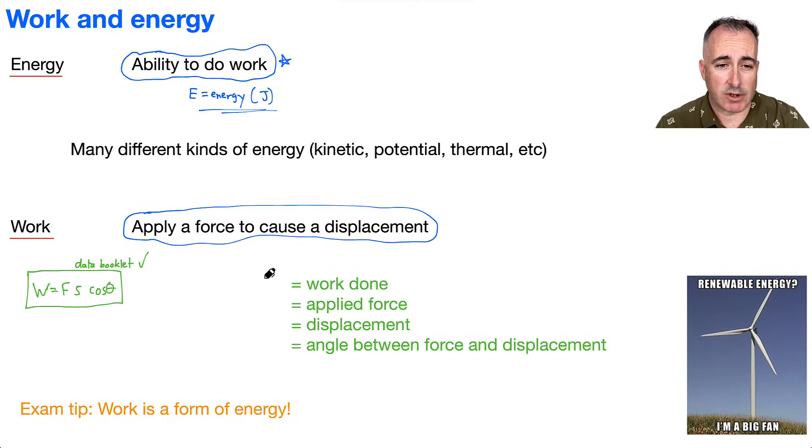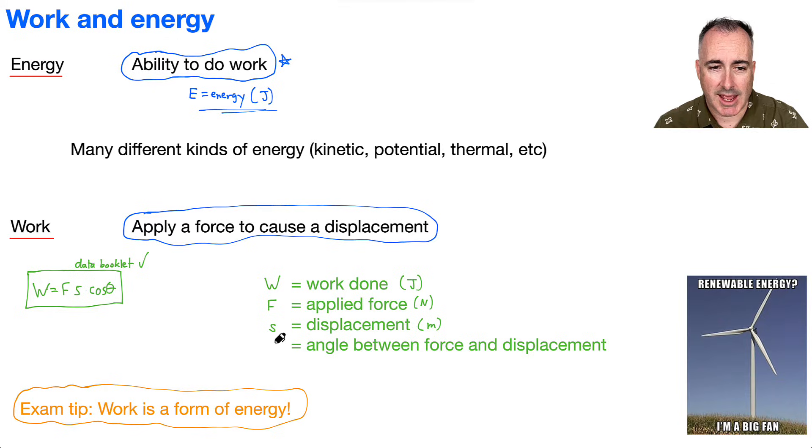Let's define our variables. W is the work done, and work is a form of energy with the same units in joules. F is an applied force measured in newtons. S is the displacement measured in meters. Theta is the angle between the force and the displacement measured in degrees.